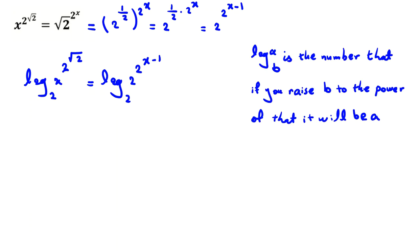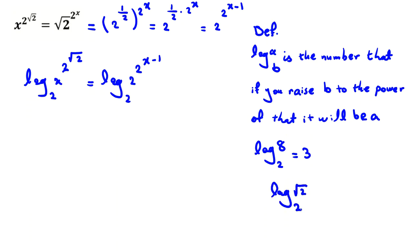Let me tell you something about logarithm. Always memorize this definition: log a in base b is the number that, if you raise b to the power of that, it will be a. For example, log 8 base 2 is the number such that 2 to the power of that is 8, which is 3. Similarly, log root 2 base 2 is 1/2, since 2 to the power of 1/2 is root 2.